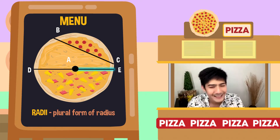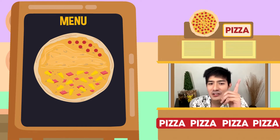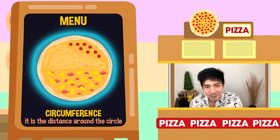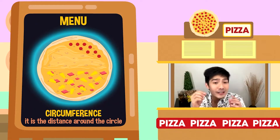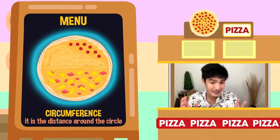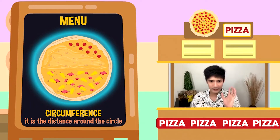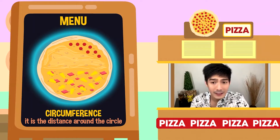Dapat tandaan po natin yung mga terms ito dahil meron pa tayong pag-aaralan. It's called circumference. Ano yung circumference? Flavor ba yun ng pizza? Hindi! Ang circumference ay yung palibot ng circle, or ito yung distance around the circle. Kung sa pizza — yung crust natin, yun yung circumference.